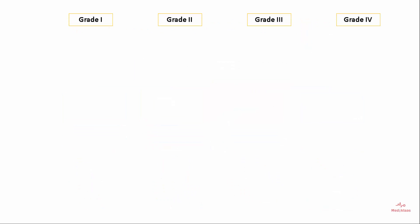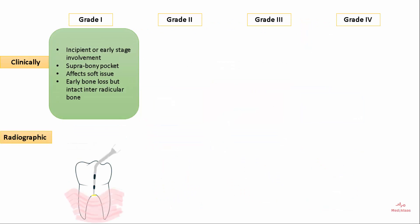Grade 1 is the incipient or early stage of involvement. There is a suprabony pocket which only affects the soft tissues. Early bone loss may be occurring but the inter-radicular bone is intact. Radiographically, you may not see any significant radiographic change.